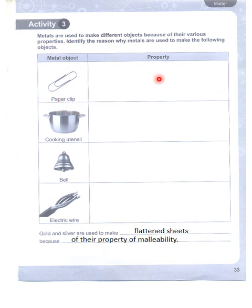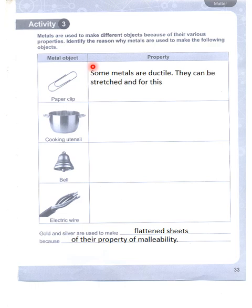Activity three: metal objects. A paper clip is an example — this property is that some metals are ductile, meaning they can be stretched. For this reason, they are used to make things like paper clips.